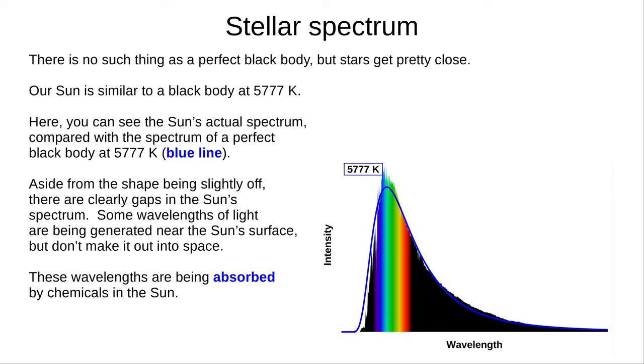Now you may have noticed that some things aren't black. No matter absorbs all radiation, except black holes, so there's no such thing as a perfect black body. But stars come pretty close. Here is the sun's actual spectrum. Compared with the blue line showing the spectrum of a perfect black body at 5,777 Kelvin, the shape is slightly off. But more importantly, there are gaps in the sun's spectrum. Some wavelengths of light are generated near the sun's surface, but don't make it out into space. This is because they're being absorbed by chemicals in the sun.